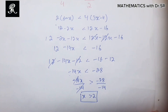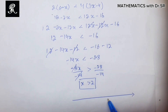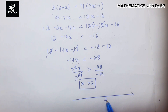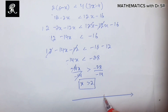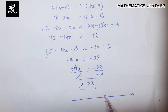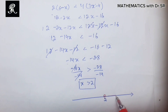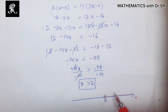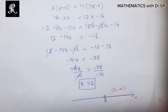Now let us draw the solution on the number line. We mark 2 on the number line. Since x is strictly greater than 2, we draw an open circle at 2 (because 2 itself is not included) and shade all the way to positive infinity. In interval notation, the solution is written as the open interval (2, infinity).